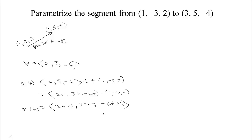Now we would want to put bounds on t. Let's have t start at 0 and end at 1. So if we plug in 0 here, we're at the point 1, negative 3, 2. If we plug in 1, 2 times 1 is 2, plus 1 is 3, 8 minus 3 is 5, and negative 6 plus 2 is negative 4. So we're at the ending point.